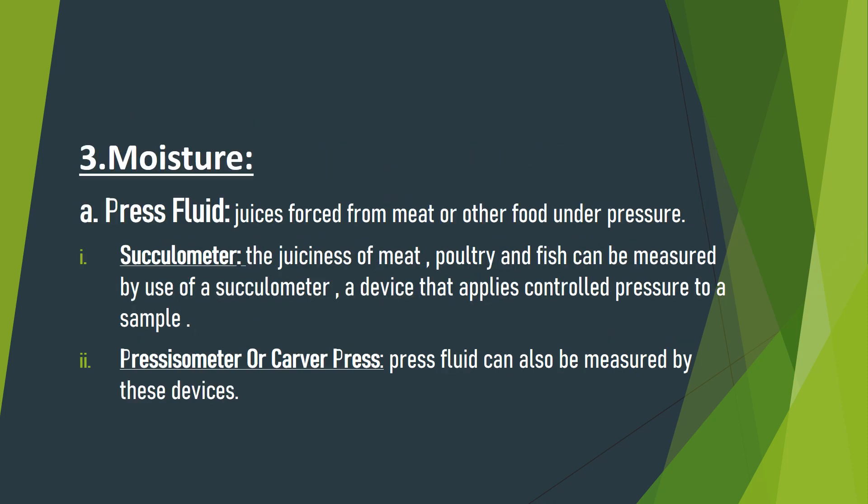Pressed fluid juices are fluids forced from meat or other food under pressure. The sculometer measures the juiciness of meat, poultry, and fish and can be measured using a device that applies controlled pressure on a sample. Pressed fluids can also be measured by these devices.